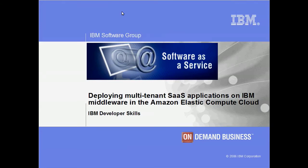IBM has recently announced the availability of multiple IBM Middleware products for the Amazon Elastic Compute Cloud. In this demo we will show how the newly available WebSphere SMASH and DB2 Express-C Amazon Machine Images can be used to deploy a sample multi-tenant banking application to EC2.